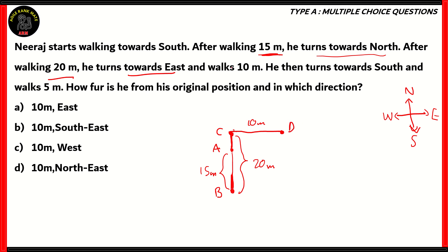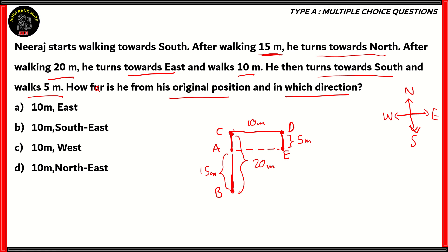Finally, from D, he turns towards south and walks 5 meters, reaching a point E. We need to find out how far he is from the original position and in which direction. Let's join the initial and final points with a dotted line. You can see that we've formed a rectangle A, C, D, E. In this rectangle, the parallel sides are equal. The distances AC and DE are 5 meters each, and the distances CD and AE are 10 meters each. So we know that the distance AE is 10 meters. You could have gotten that without even looking at the diagram, because all of the options contain 10 meters.